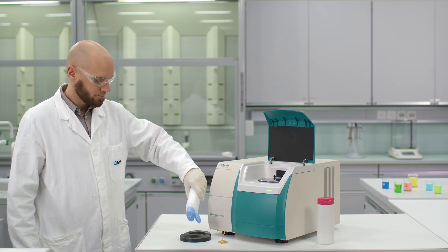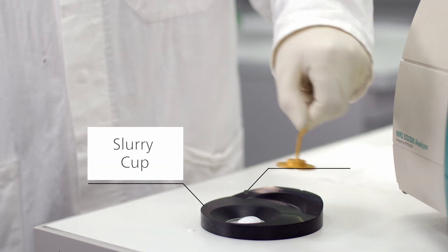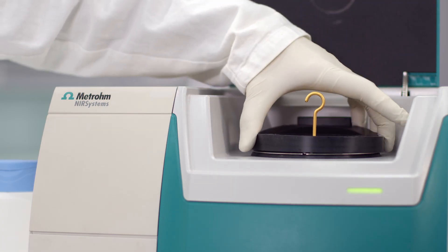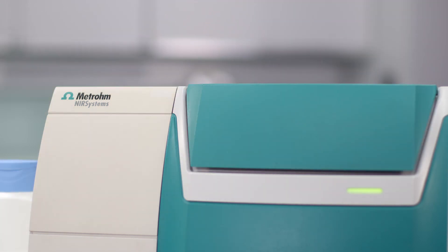Sample handling is easy with this slurry cup. Let me show you how it works. Just pour the sample into the slurry cup, place the gold reflector on top, position the sample in the DS2500 Solid Analyzer and close the lid.